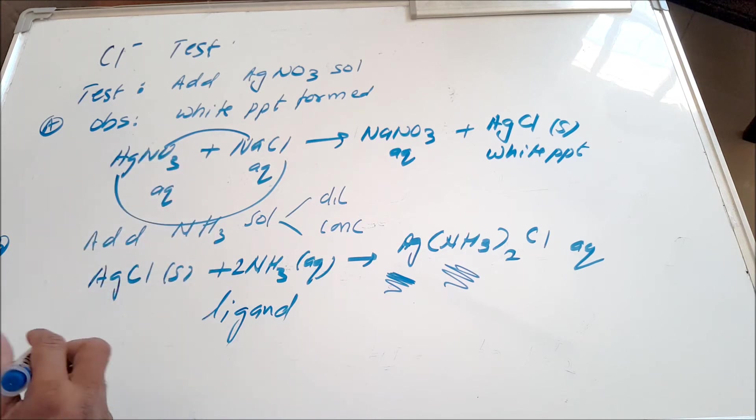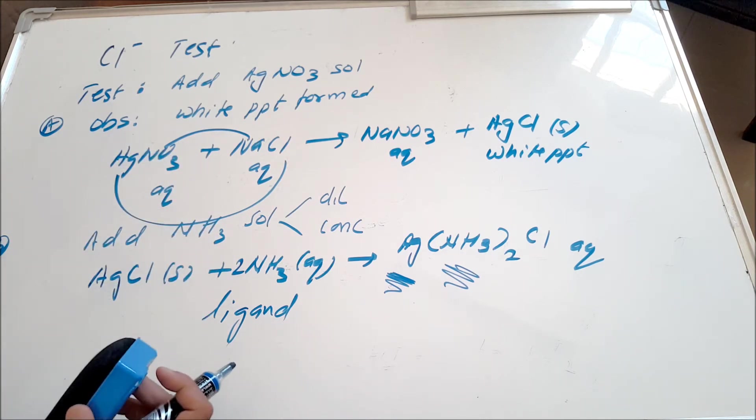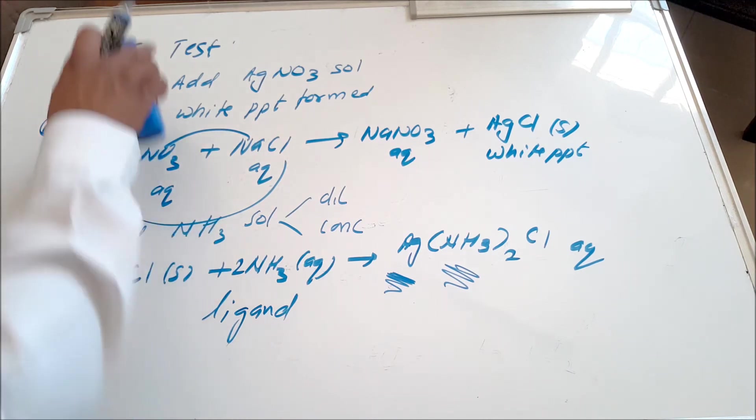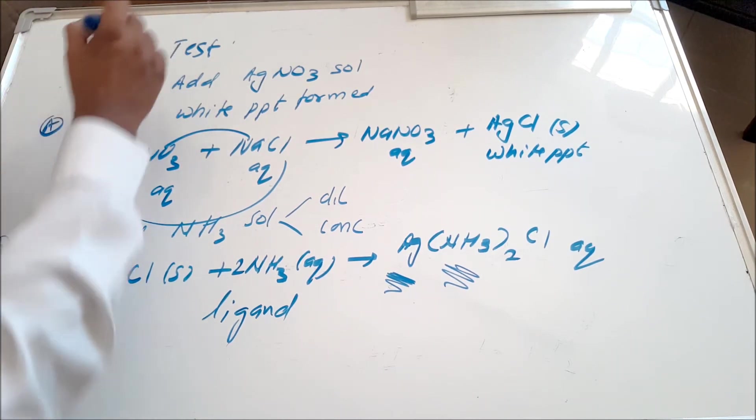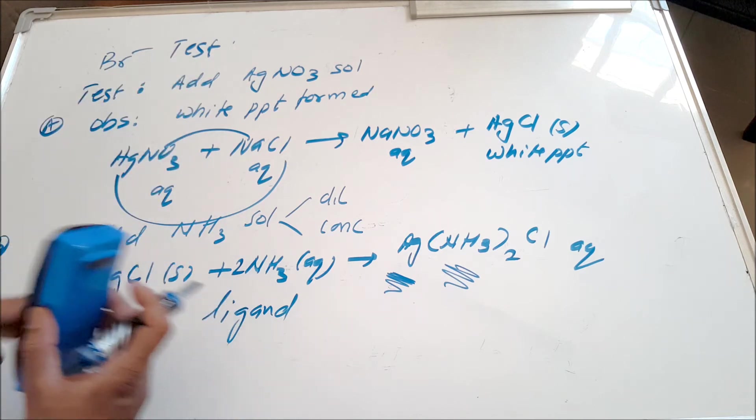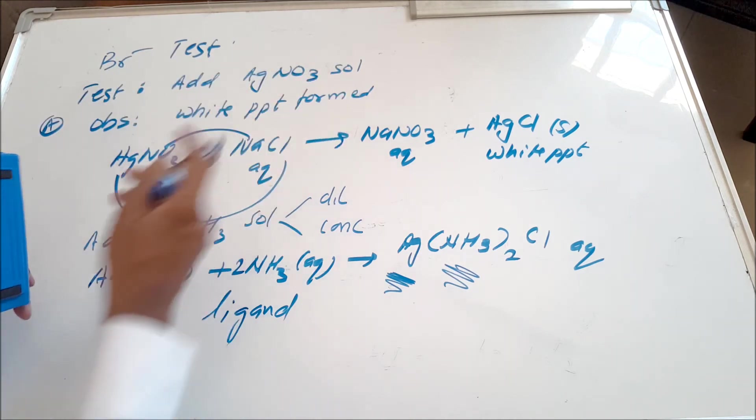That's the test of chloride ion. I'm going to now have a quick look at the test of bromide ion. See what happens now. If you look at bromide ions, it starts off similarly. We add silver nitrate solution.